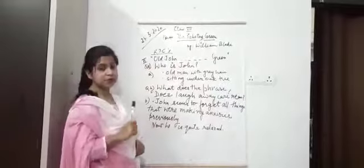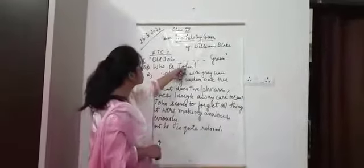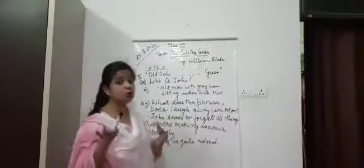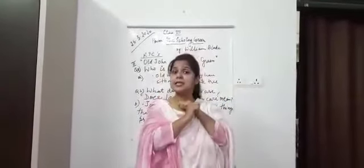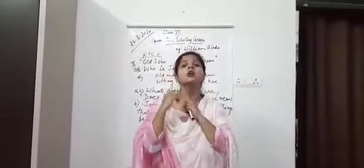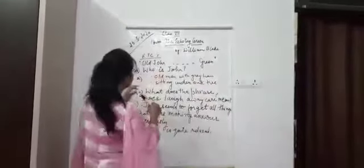Question one for this stanza: Who is John? I told you John is the old man who has grey hair. And where was he sitting? He was sitting under the oak tree. That's what you have to write everything.